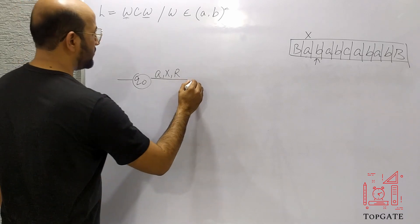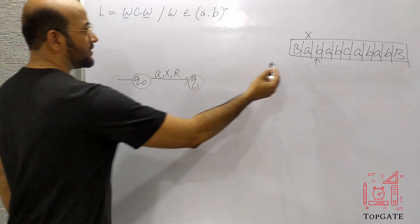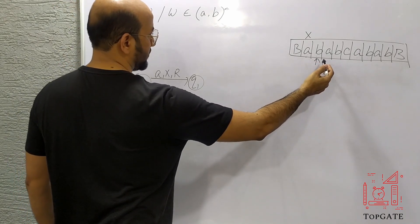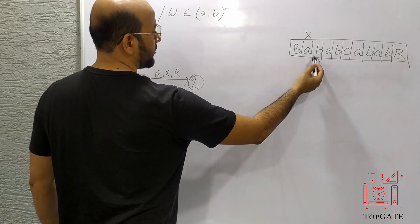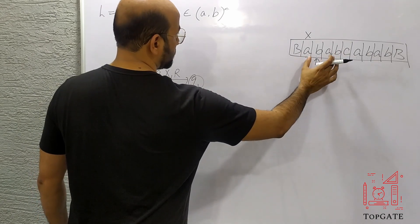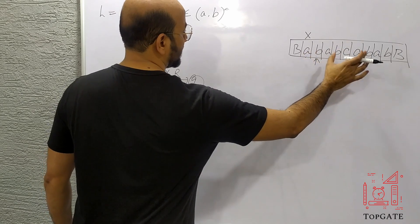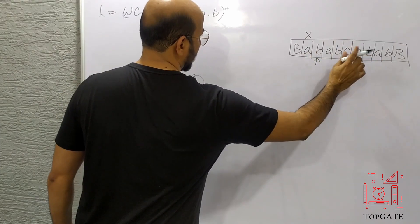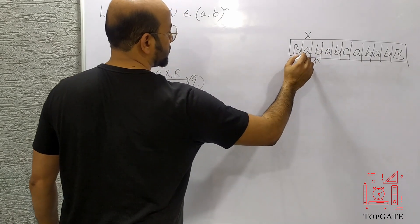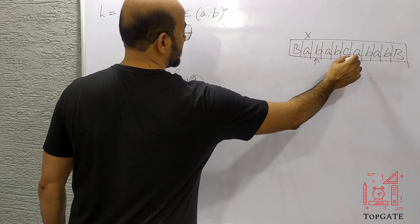This is the initial state Q0 and the read-write head is on the first A. The logic says we read this A and change it to X and go right. So this A will be changed to X and the pointer will now point to this B, and we are at Q1. At Q1 we will not do anything with this part of the string — we are done with the first part, and now I need to find a pair for this character after C.